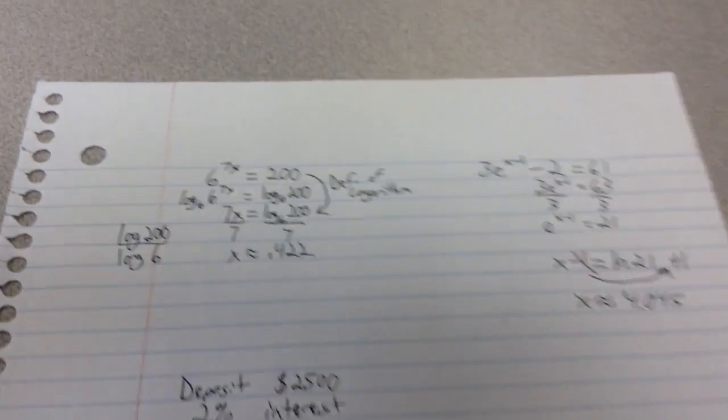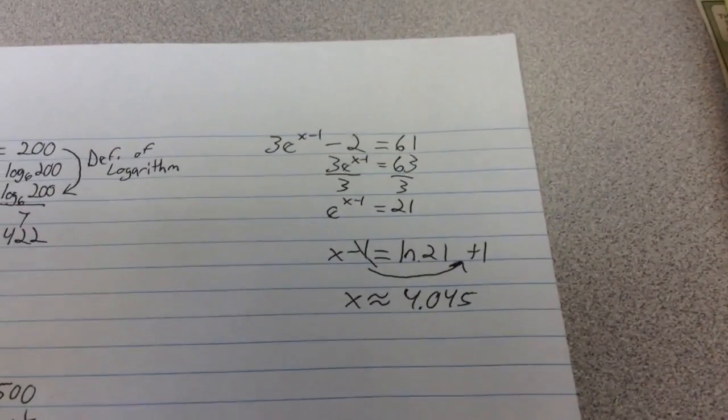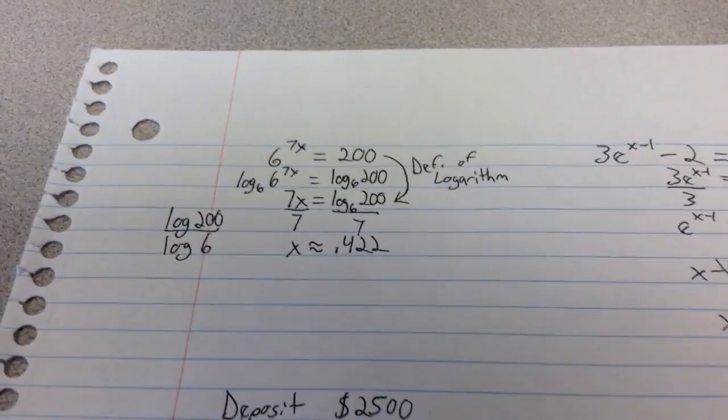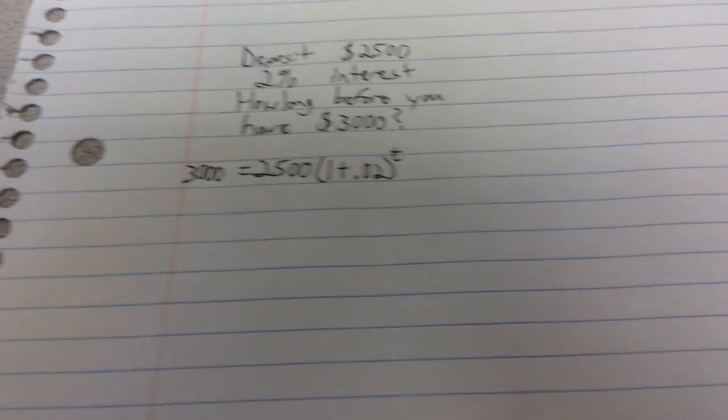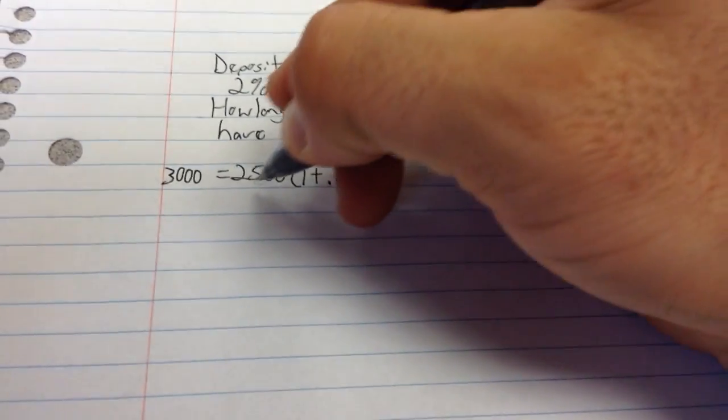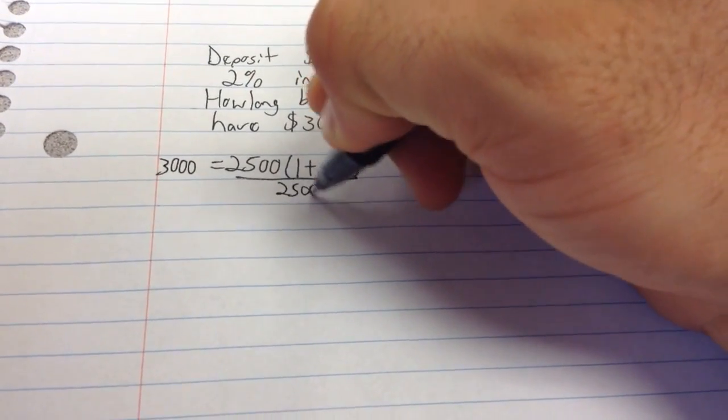So it's just like these equations that we've looked at before up here, finding the value for the x. It's the same thing. So what I want to do is I want to divide both sides by $2,500.